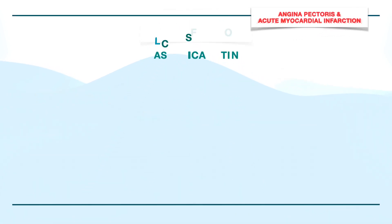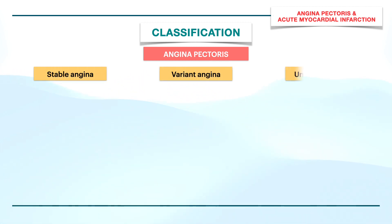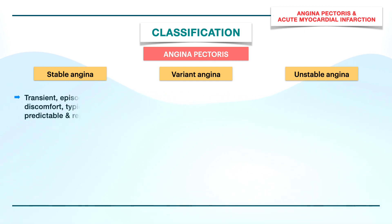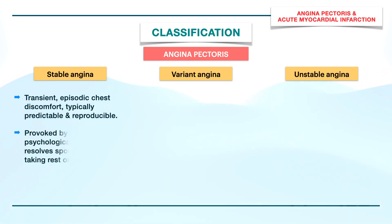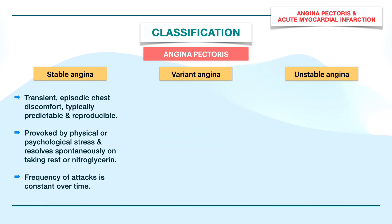Coming to the classification, angina can be grouped as stable, variant, and unstable angina. Stable angina involves transient, episodic chest discomfort, typically predictable and reproducible. It is provoked by physical or psychological stress and resolves spontaneously on taking rest or nitroglycerin. The frequency of attacks remains constant over time.